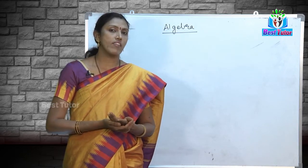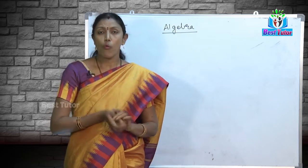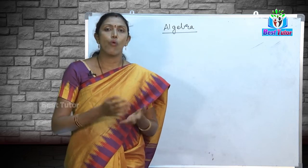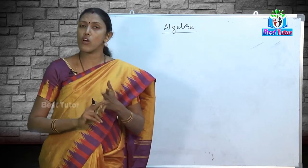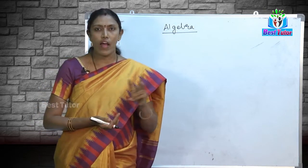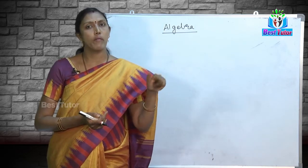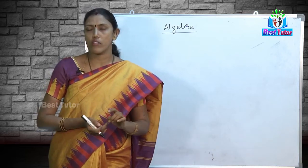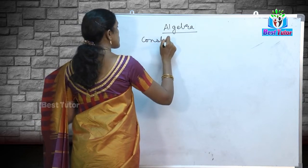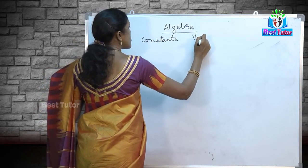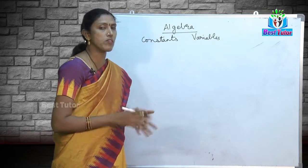If I say X into 2 is equal to some quantity, that X is a variable. Algebra deals with variables and constants. A constant like two chocolates remains two chocolates for everyone — person A, B, or C. So constants have a fixed value and variables are values that keep on changing from person to person, place to place.